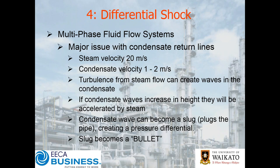The fourth form of water hammer is multi-phase fluid flow — or differential shock. This is a major issue with condensate return lines. We'll have a steam velocity of 20 metres a second or less if you've listened. Some of you might have inherited a system that's a little undersized, or perhaps the condensate line was correctly sized but then another process engineer came along with a plant upgrade and added extra capacity — but everyone ticked the box and thought the condensate system's fine, leave it. Then over time the load on that system crept up.